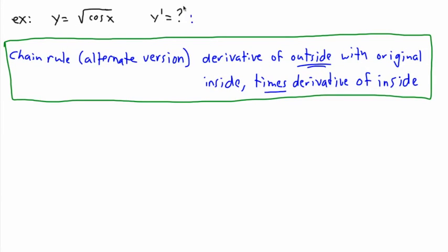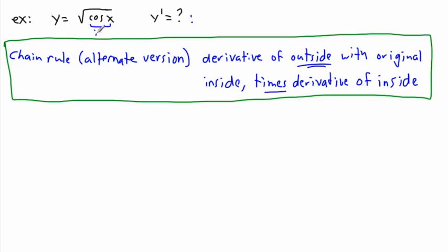We have a function within a function again. We need to figure out what's outside and inside. The cosine of x is going to be the inside. But this isn't very calculus-friendly right now because of the square root, so let's rewrite y first. A square root is the same as raising to the power of 1 over 2.